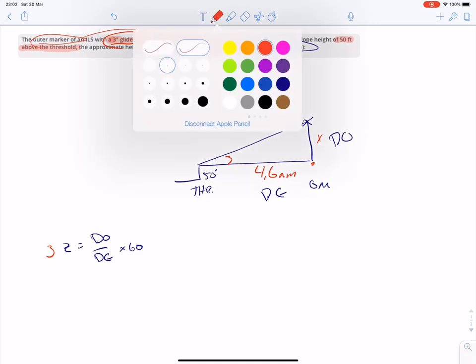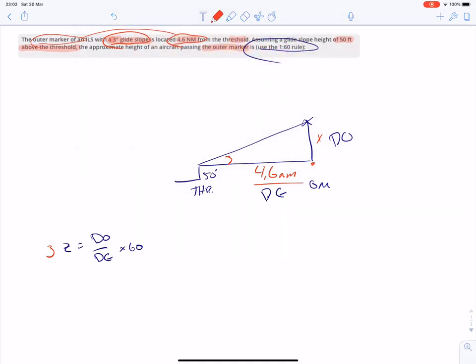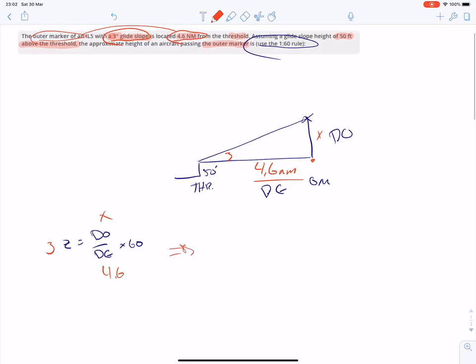So we're filling in the formula, we got the distance gone 4.6 nm and this would be the x. Now we need to twist the formula, we're looking for the distance off, is equal to 3 multiplied by 4.6 divided by 60. That will give us 0.23 nautical miles.